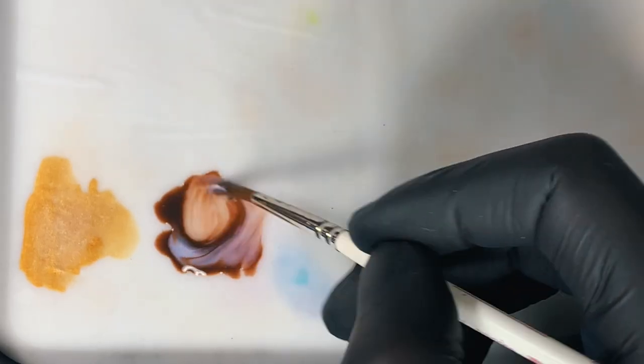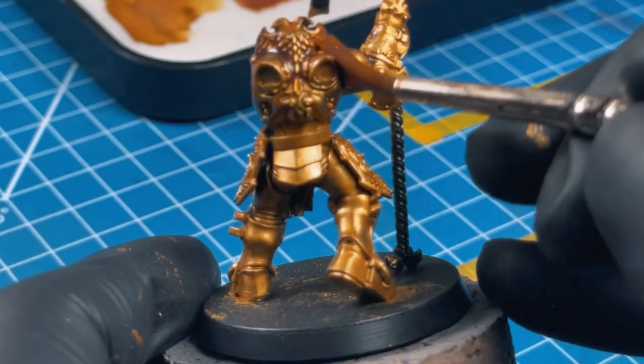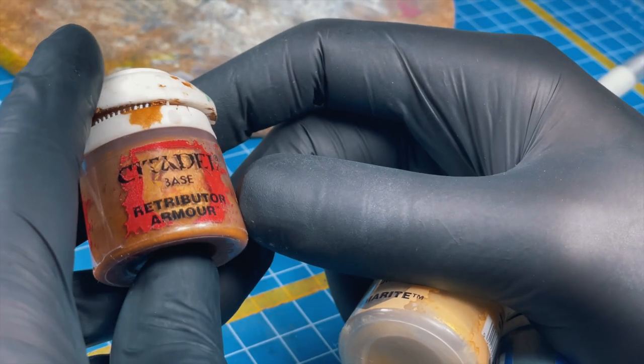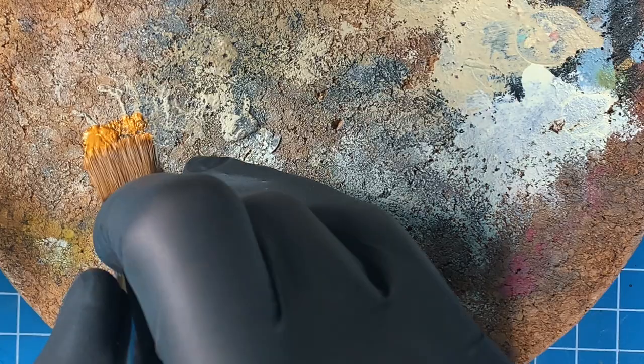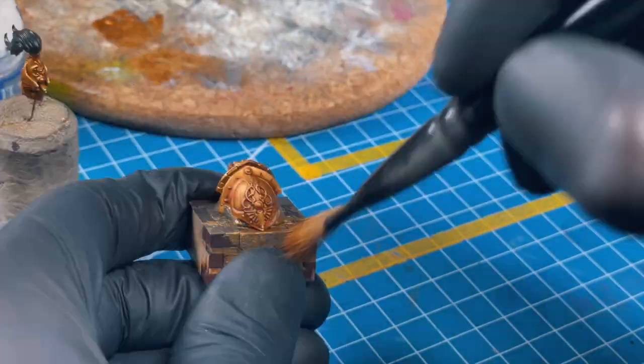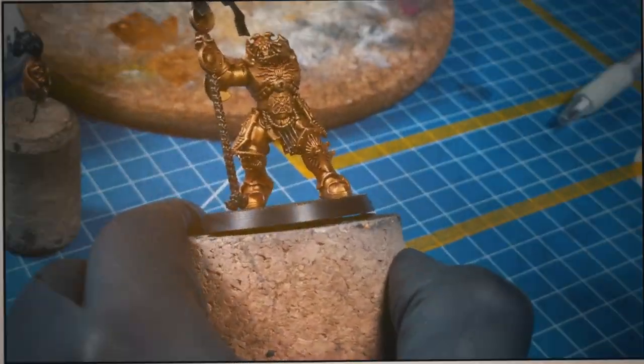Now we need to dry brush. Grab a piece of cork, grab your dry brush, and grab Retributor Gold Armor. Go for Sigmarite dry paint also, and grab your Stormhost Silver—maybe, because I switch up later—go for Necron Compound, which is also a dry paint.